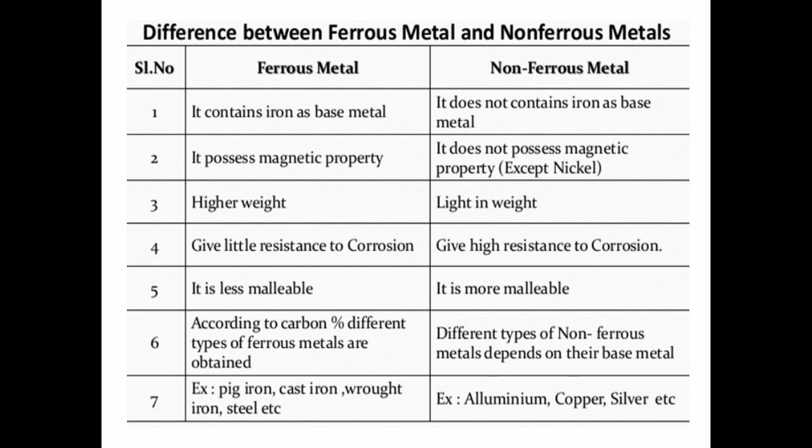The difference between ferrous and non-ferrous metals: First, ferrous material contains iron as a base metal, whereas non-ferrous metals do not contain iron. Second, ferrous materials have magnetic properties, whereas non-ferrous materials do not possess magnetic properties. Third, ferrous metals have higher weight, whereas non-ferrous metals are light in weight. Fourth, ferrous metals give little resistance to corrosion, whereas non-ferrous materials give high resistance to corrosion.